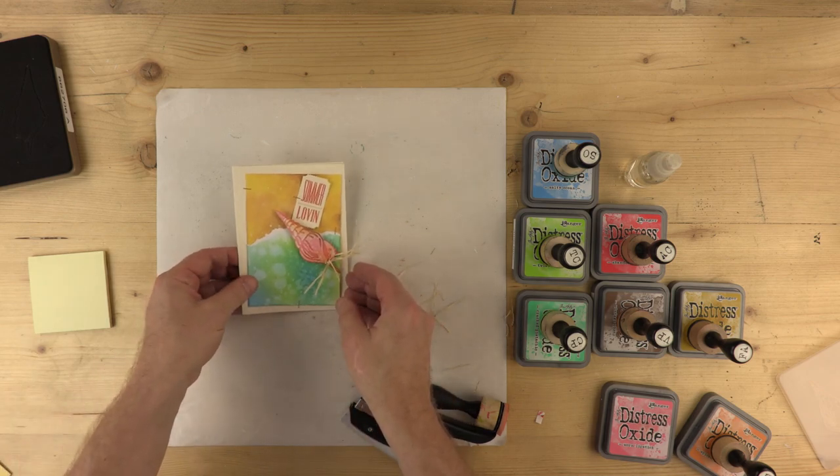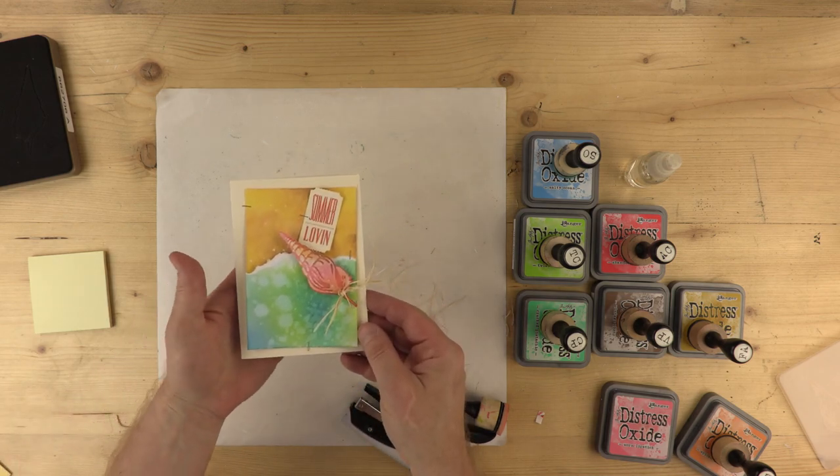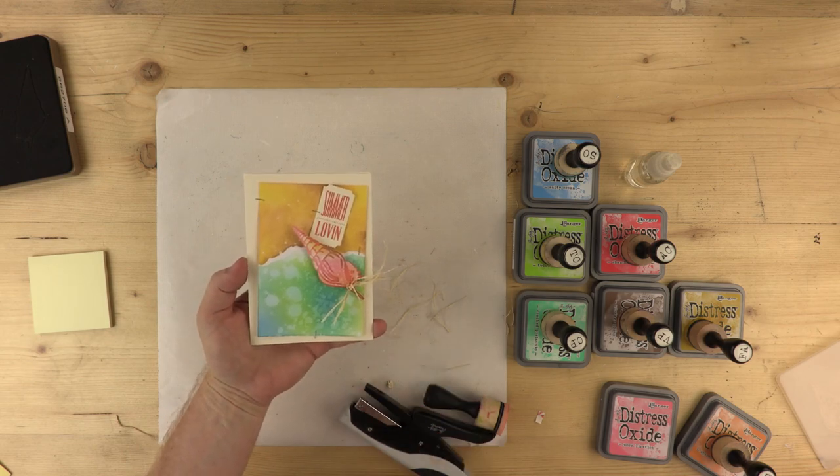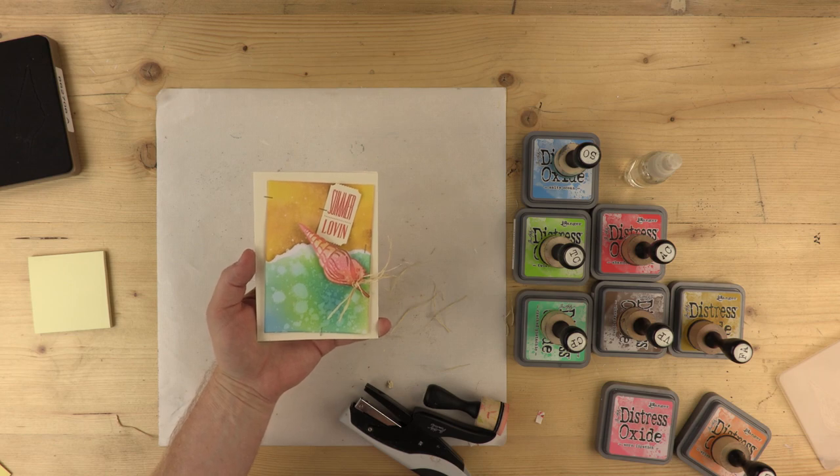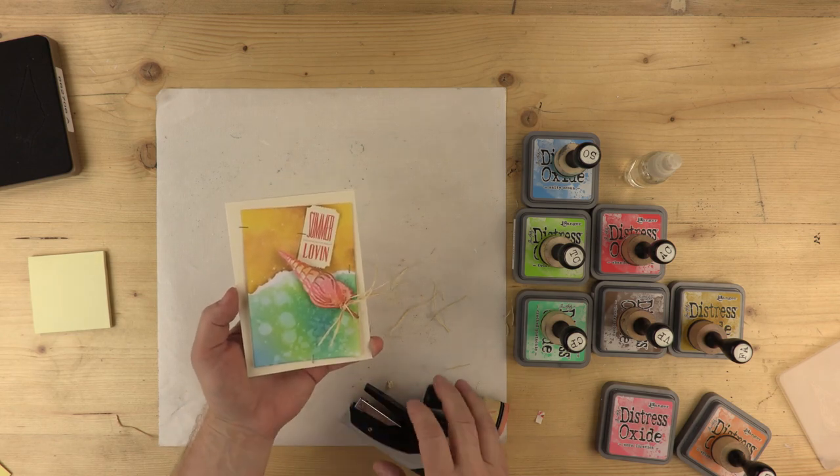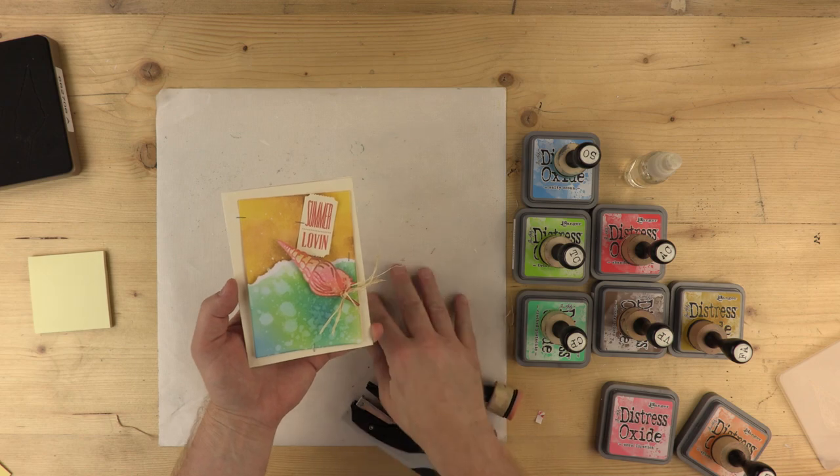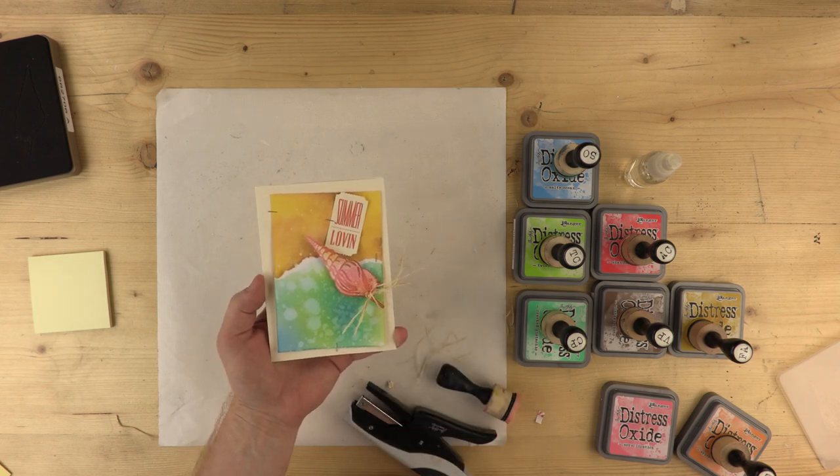And there we have it. All done. It's a lovely set of techniques, the way that the colours apply. But obviously having the die and the embossing folder together in one set really makes a big difference. There you go. I hope you enjoyed that. Brought a bit of summer sunshine into your lives. If you enjoyed the make, you want some more inspiration perhaps, or you just want to find out more about our products, then go to Sizzix.co.uk. Thanks for watching and I'll see you again soon. Bye!